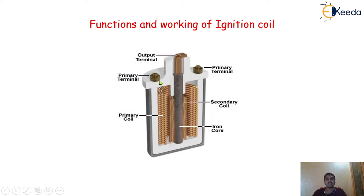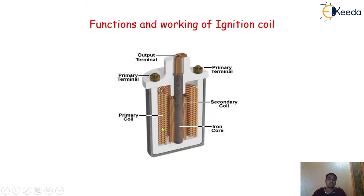Here the primary terminal is there, and here is another primary terminal. Here is the output terminal which is connected to the distributor system of the spark wire. The current coming from the battery, say 12 volts, will come first into this particular primary winding. The number of turns are less, so it will enhance the voltage — the 12 volts from the battery will convert to near about 5000 volts as it passes from the primary winding.